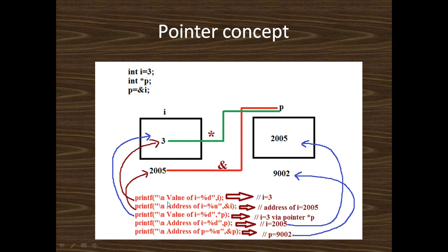If we print the value of i using printf("%d", i), it prints i equal to 3. If we print the address of i using printf("%u", &i), here &i defines the address of variable i and %u format specifier is used to print the address. So the address of i is 2005. Note that on different machines addresses are different, and addresses are defined in computer programming using hexadecimal notation.